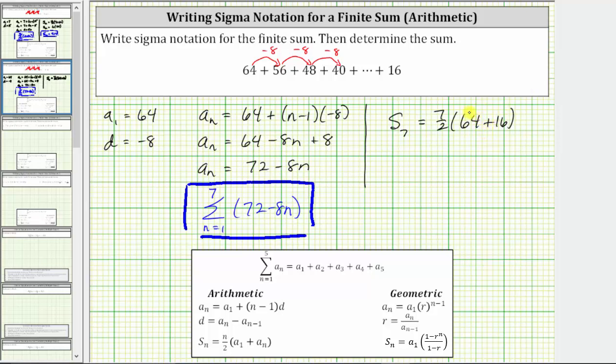Simplifying inside the parentheses, 64 plus 16 equals 80. This is equal to 7 halves times 80. That's right, 80 is 80 over 1. Before multiplying, we simplify.